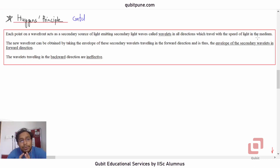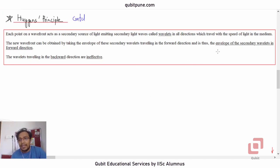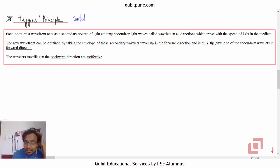The new wavefront can be obtained by taking the envelope of the secondary wavelets traveling in the forward direction — it is the envelope of the secondary wavelets in the forward direction. That gives us the new wavefront.